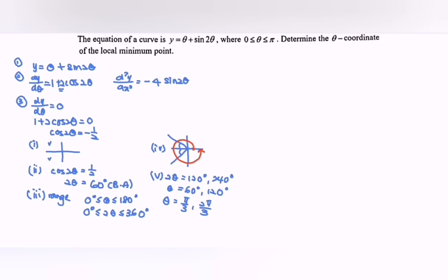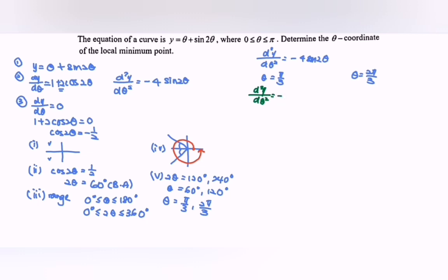Next, we test using the second derivative, which is negative 4 sine 2θ. For θ equal to π/3, substituting gives negative 2 multiplied by √3, which is less than 0 — this is a maximum. For θ equal to 2π/3, the second derivative is 2 multiplied by √3, which is greater than 0 — this is a minimum.